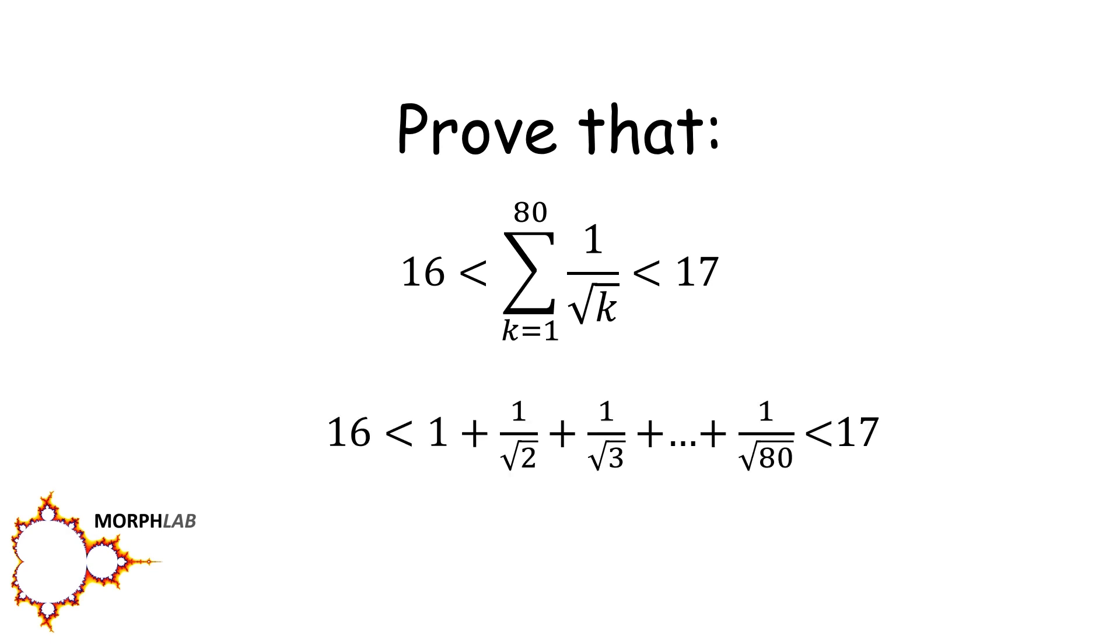In other words, 1 plus 1 over root 2 plus 1 over root 3 all the way to 1 over root 80 is between 16 and 17.